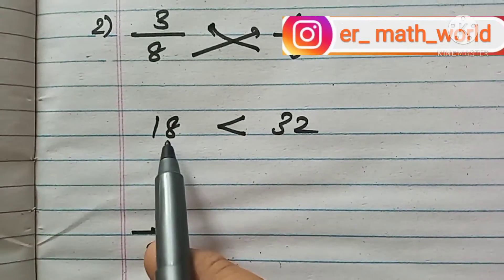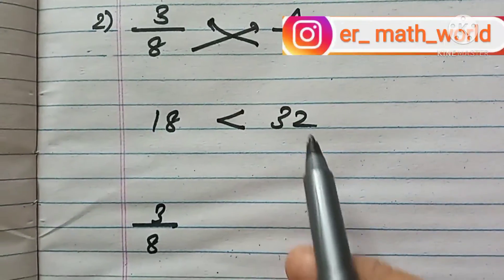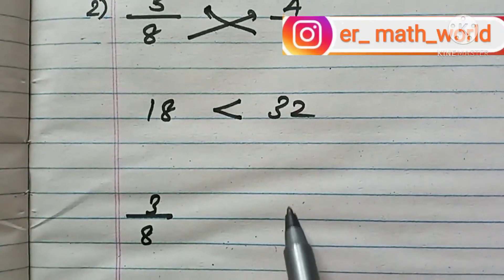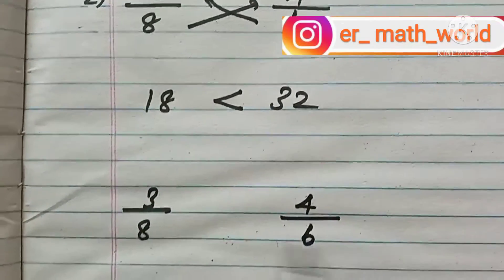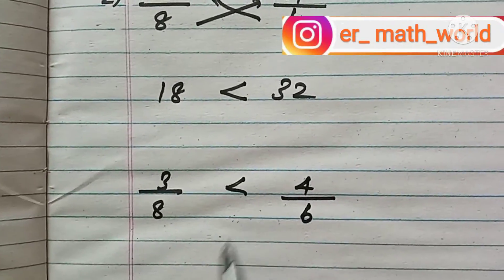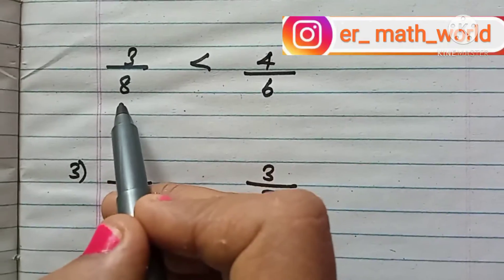This is the concept of how to compare unlike fractions. Unlike fractions are nothing but two fractions which have different denominators. Today we are going to see that kind of fractions.